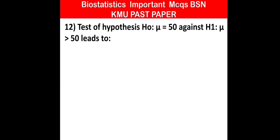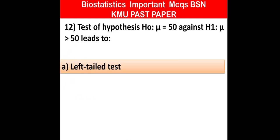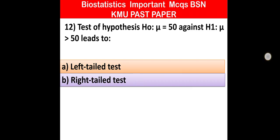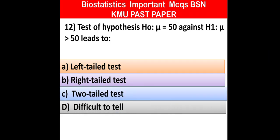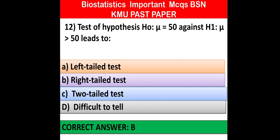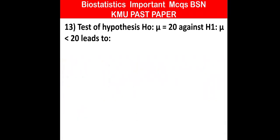MCQ number 12: Test of hypothesis H0 = 50 against H1 less than 50 leads to — left tail, right tail, two tail, or difficult to tell. Option B is correct: right tail test. MCQ number 13: H0 versus H1 greater than 20 — which test? Option B is correct: right-sided one tail test.